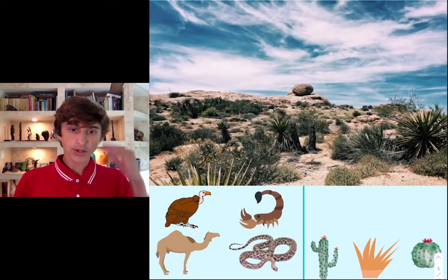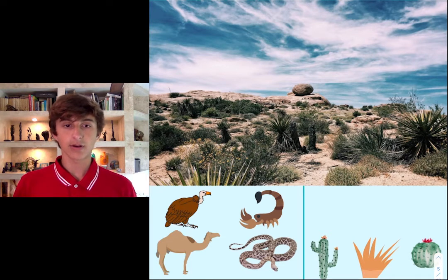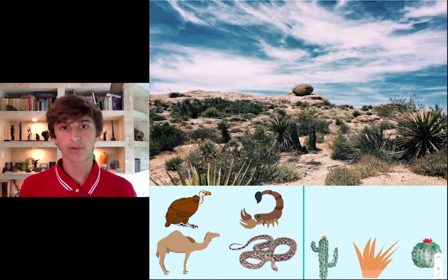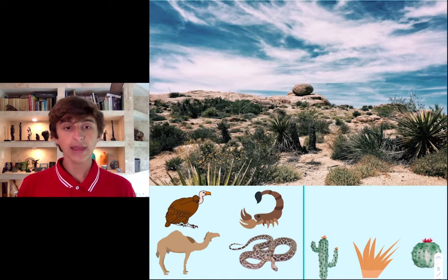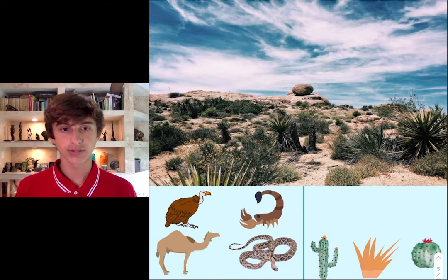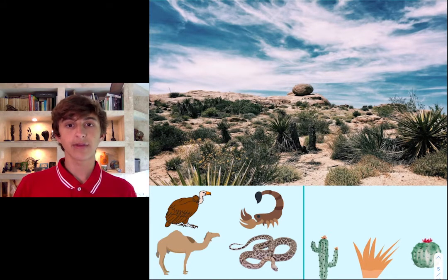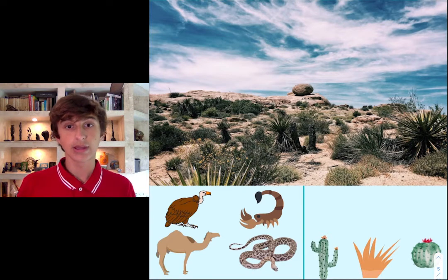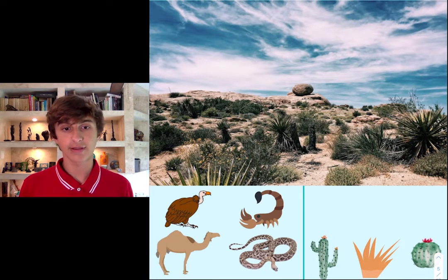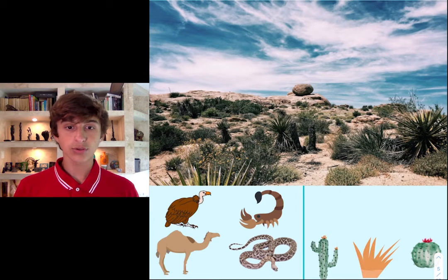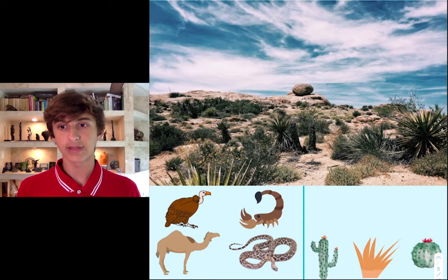The plants that live in the desert — shown on the right side — are shrubs and cacti that can go a while without water. The animals also need to be okay with those conditions, able to go a while without food or water and survive extreme heat and cold. Animals like camels, scorpions, snakes, and vultures are some examples of animals that have adapted to the desert.